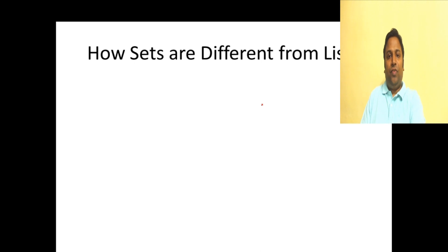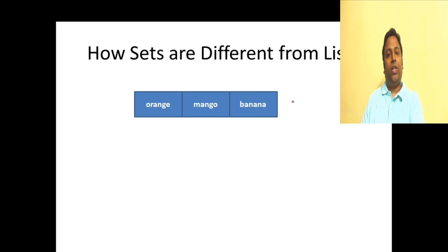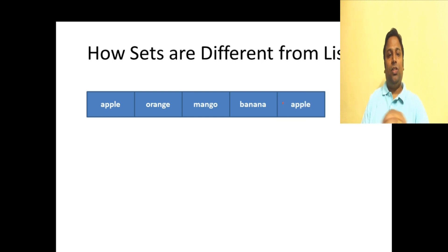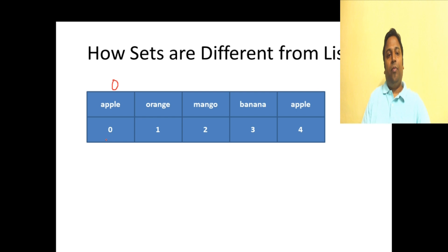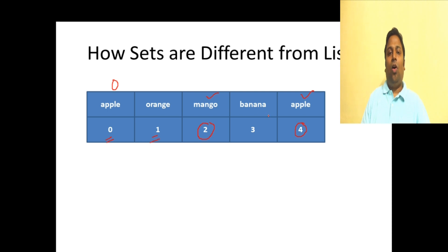To better understand sets, let's first understand a list. When you talk about a list, we push items from the head using LPUSH and from the tail using RPUSH. Once an item is inserted, the insertion order is maintained in the list. Whenever I retrieve this list, the order of insertion will always be the same - if apple is at index zero, it will always be at index zero if not changed.